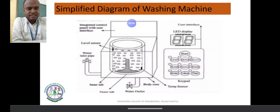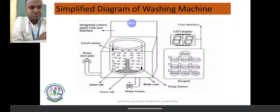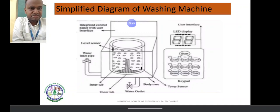Looking at the diagram, this is a very easy diagram. The outer tub is a rectangular box with an integrated panel with user interface. Water inlet, outlet, and pipe are present. On the right side, there is an LED display unit. On the left, the keypads — start, stop, types of load, water, and time.